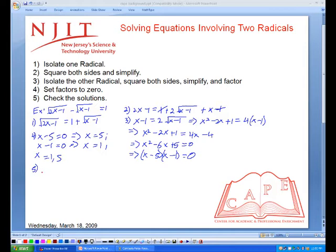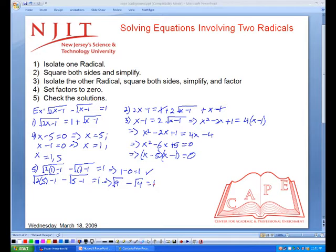And then we check our solutions. And this will clearly hold, because 1 equals 1. This too holds, because radical 9 is just 3, radical 4 is just 2. So 3 minus 2 equals 1.